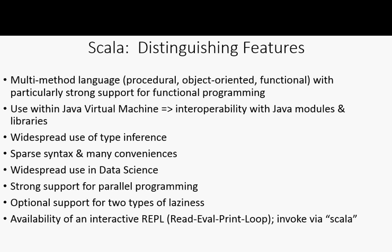Scala works with the Java Virtual Machine, which means it's totally interoperable with Java. You can have one project that's part Scala, part Java, and part other JVM-targeting languages, and they'll work interchangeably. In Scala you can directly use Java libraries and familiar Java classes without difficulty. It also has strong support for parallel programming, and it supports optional laziness — you can say you don't want something computed until you need it, or not computed until each time you need it.